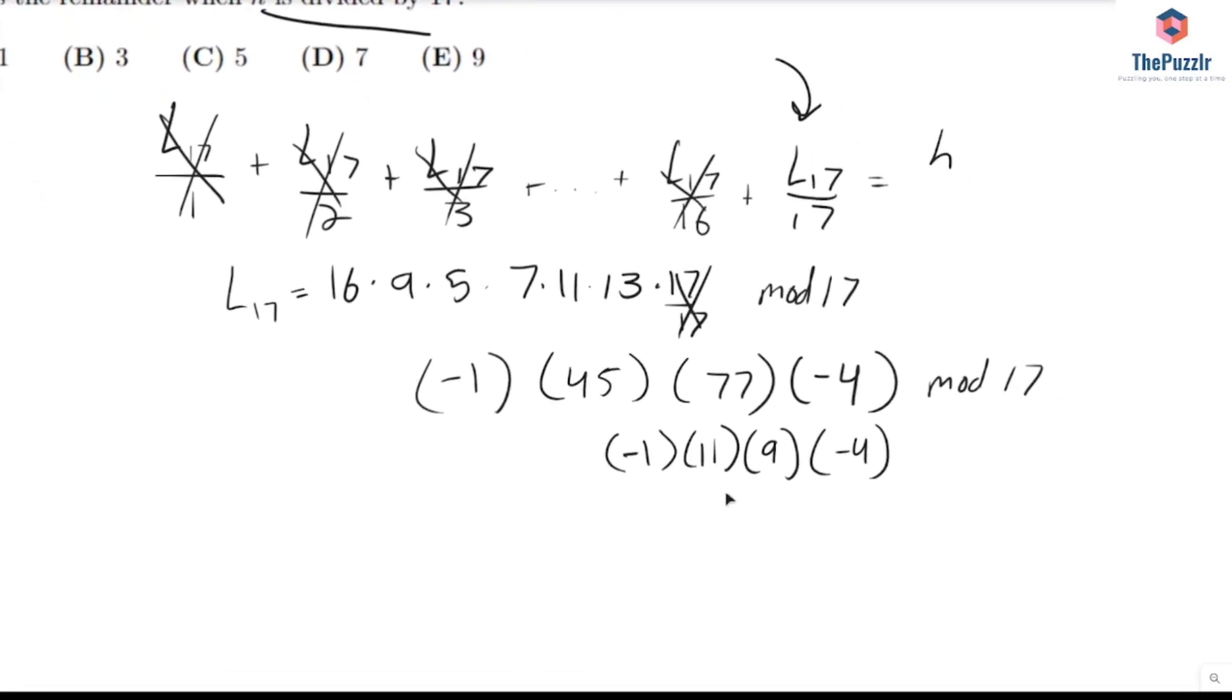So we have mod 17, this is 99 times 4. Okay, what's 99? Well, we already know that 68 and then 85 are factors, so it's 14 times 4 mod 17.